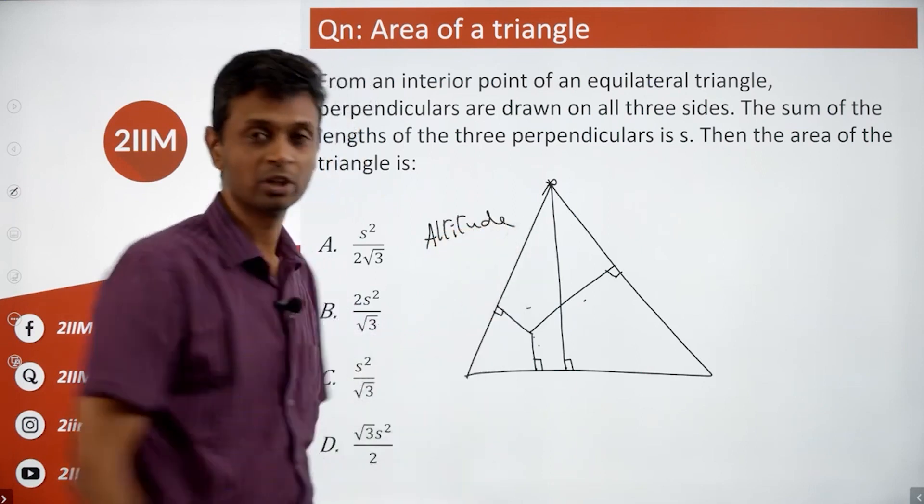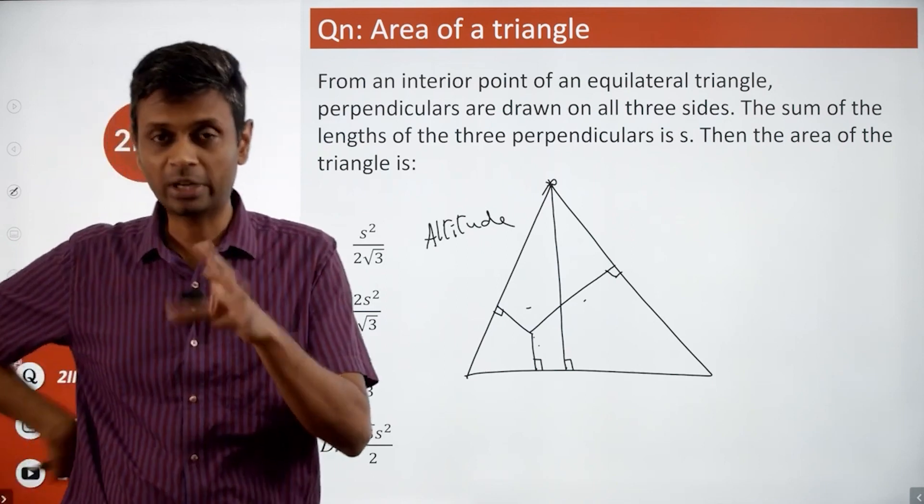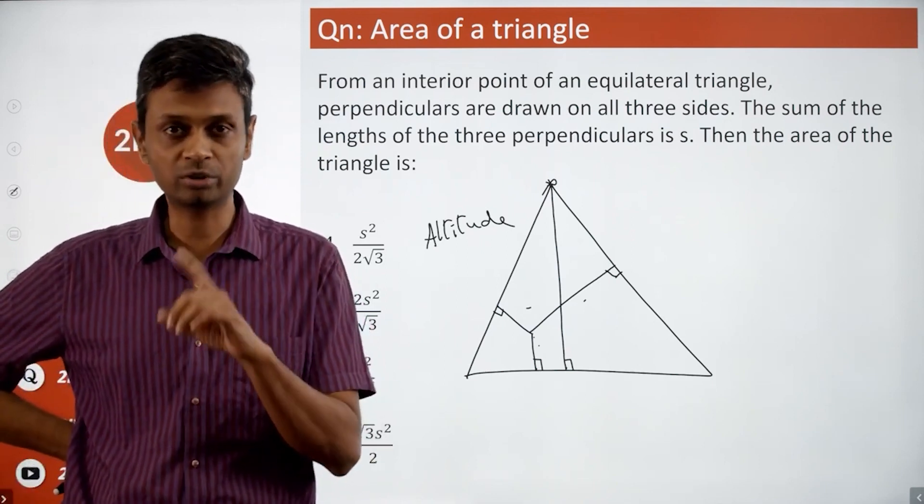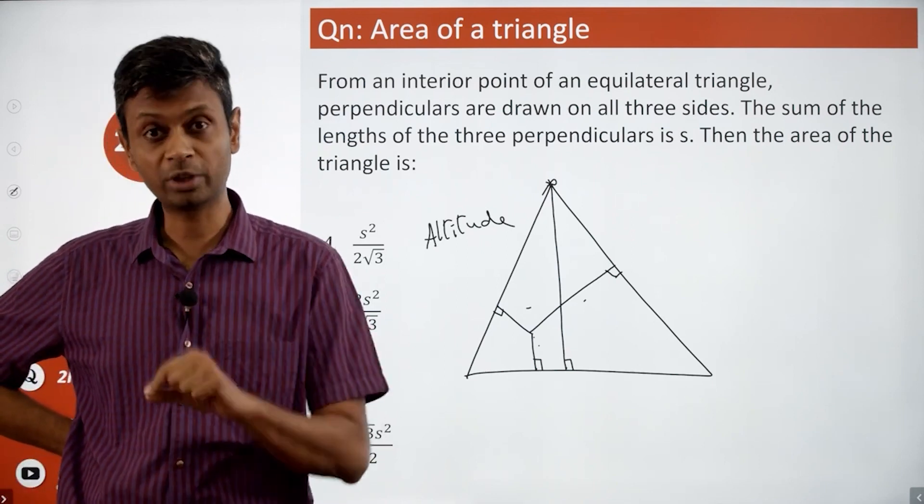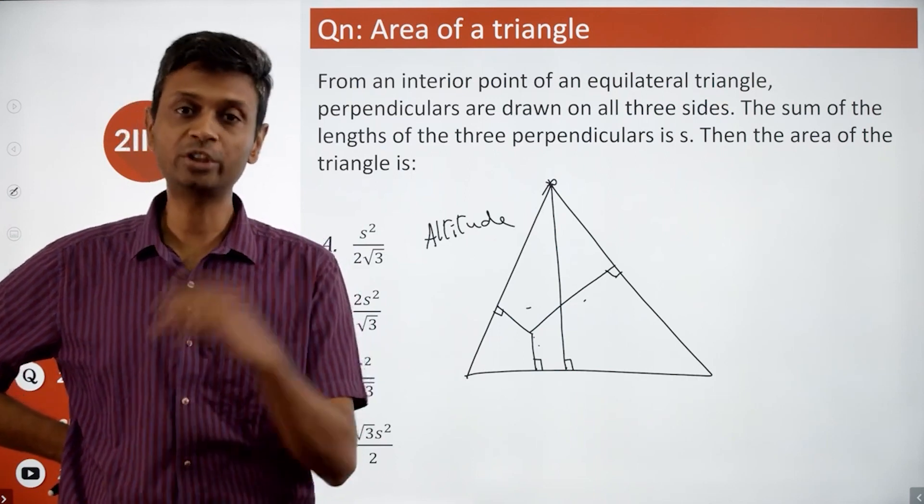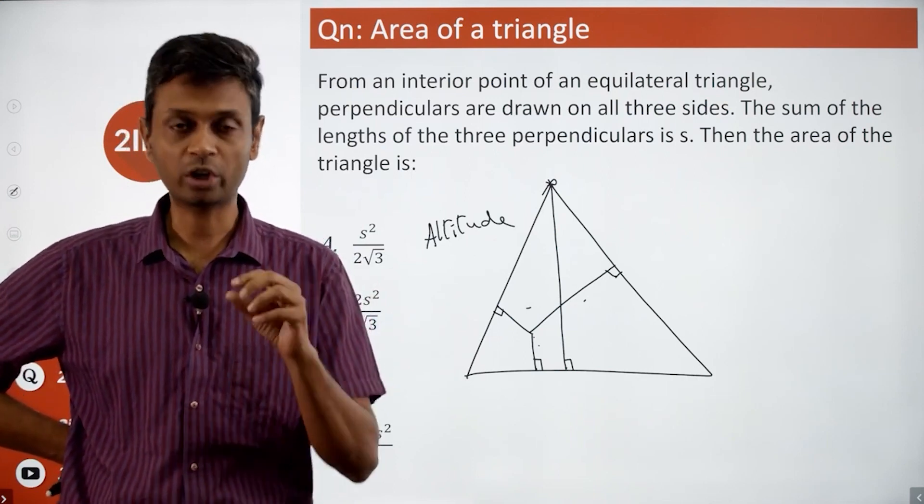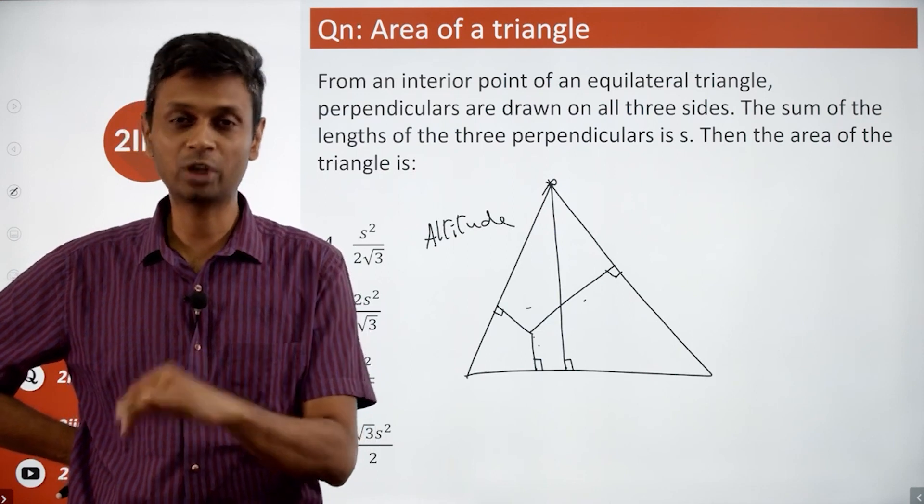See if we can prove this. From any point on the interior of an equilateral triangle, if you drop three perpendicular to the three sides, the sum of those three perpendiculars will add up to the altitude of the equilateral triangle. And not rocket science, very easily provable. See if you can prove it.